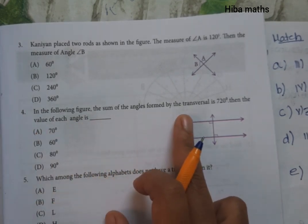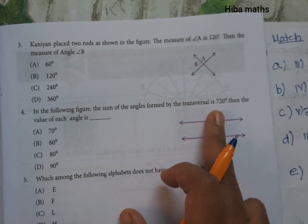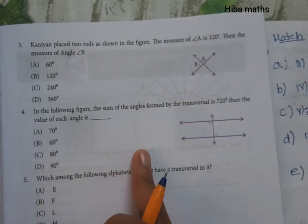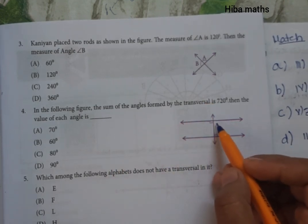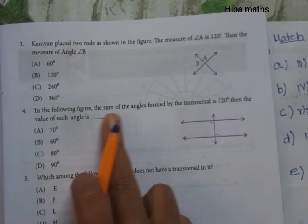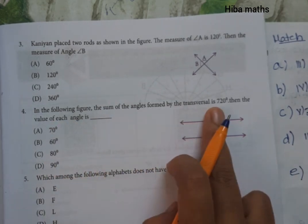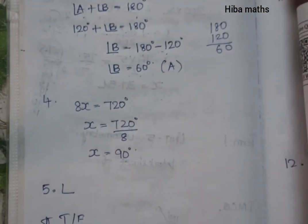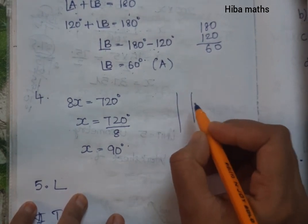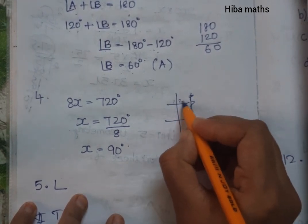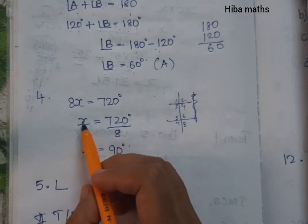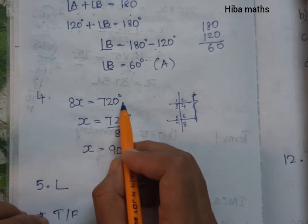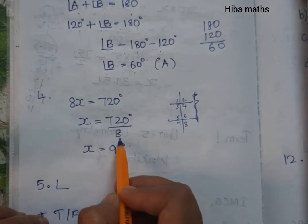That is the fourth question. In the following figure, the sum of angles formed by the transversal is 720 degrees. Find the value of each angle. With a transversal, we have 8 angles: 1, 2, 3, 4 and again 1, 2, 3, 4. So 8 into x is equal to 720 degrees.